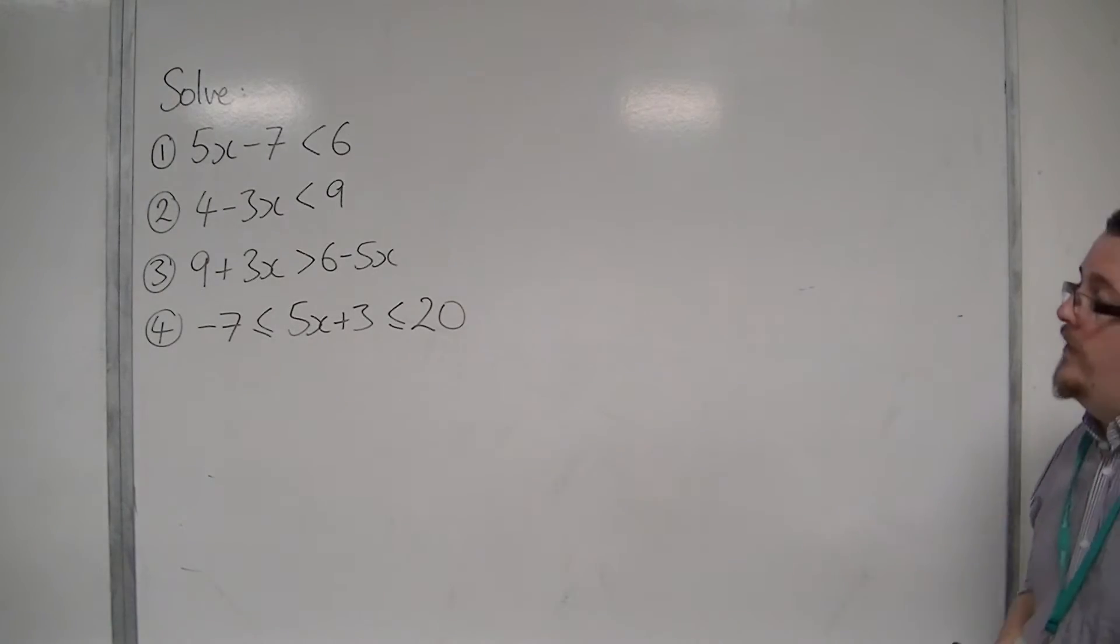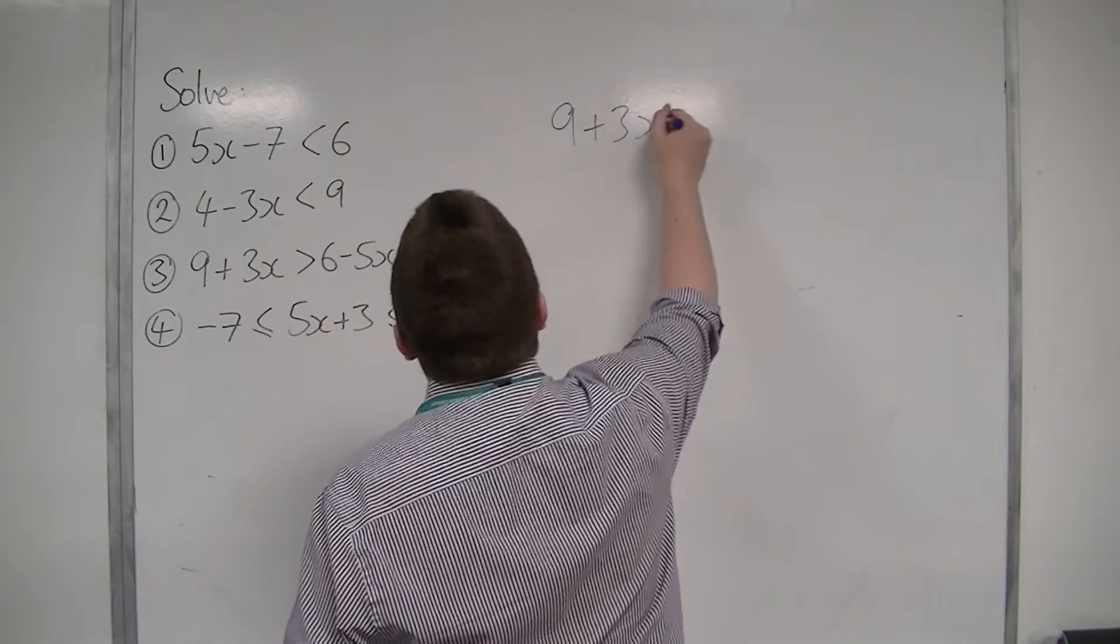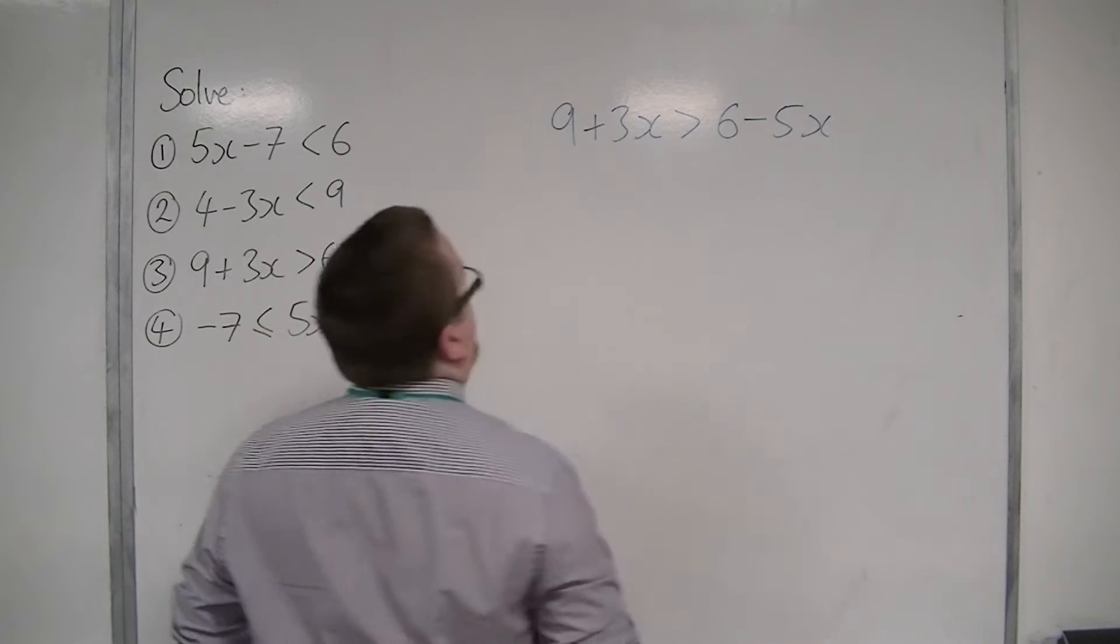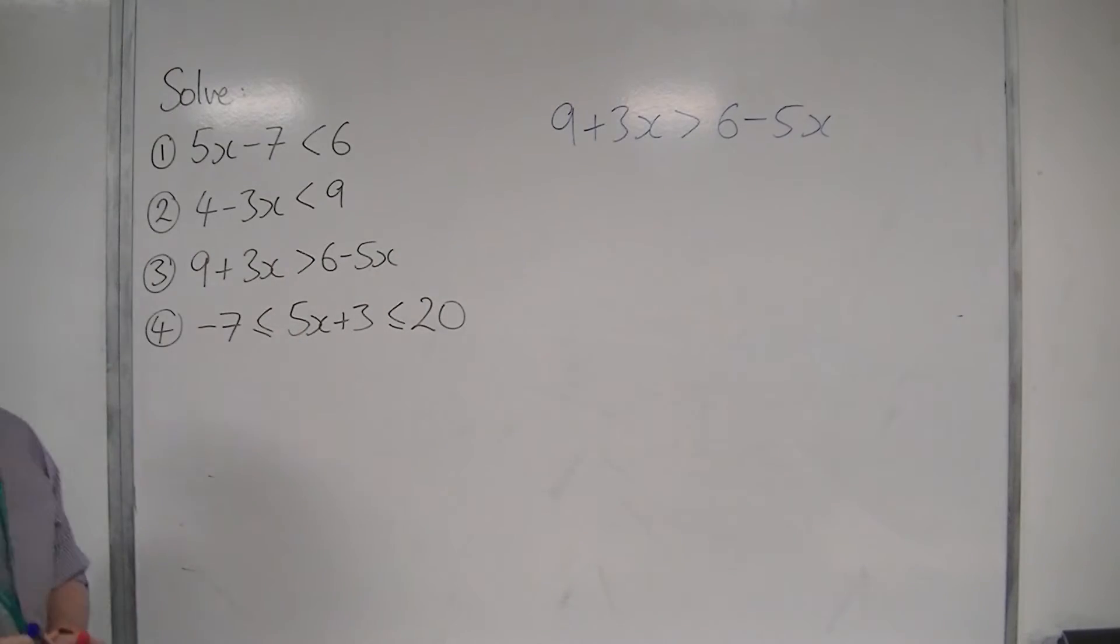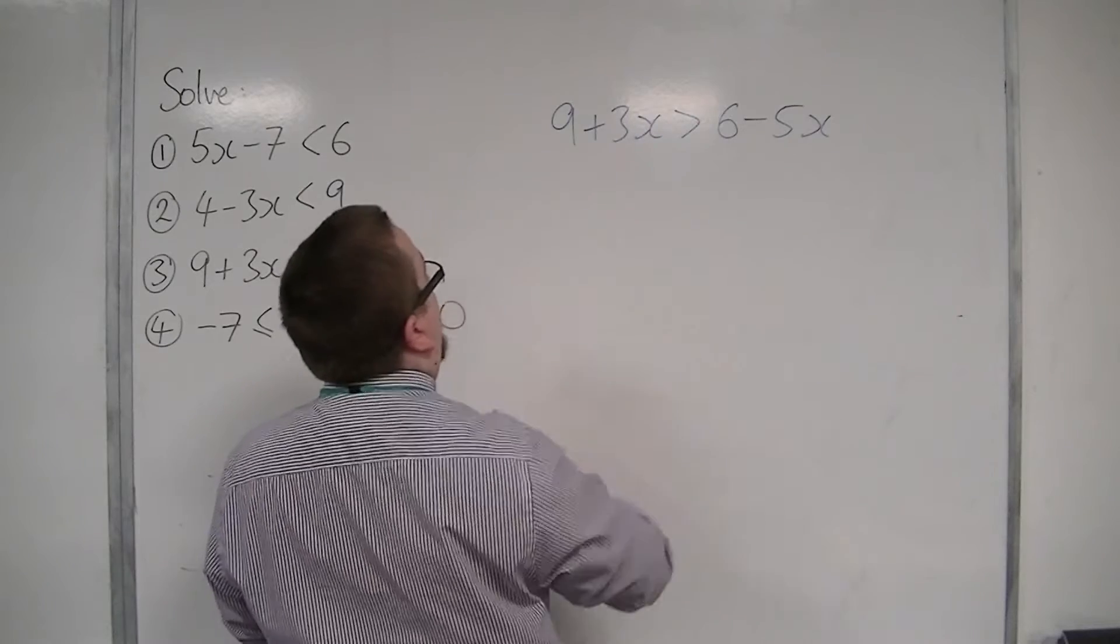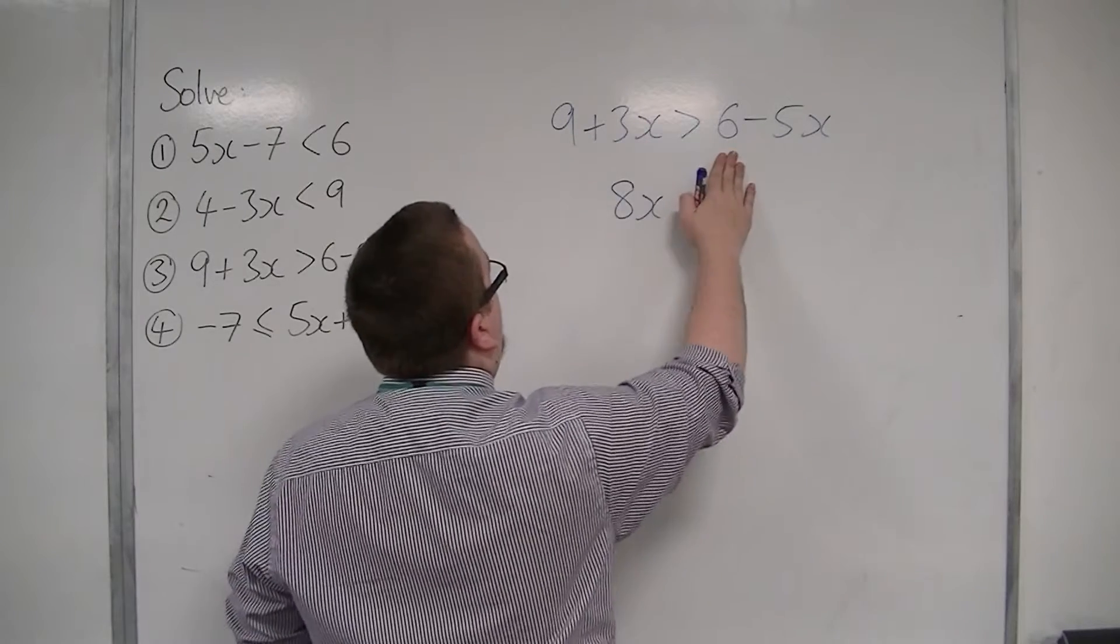9 plus 3x is greater than 6 minus 5x. So much in the same way as it would be if you were solving an equation, I'm going to add 5x to both sides. And I'm going to subtract 9 from both sides.